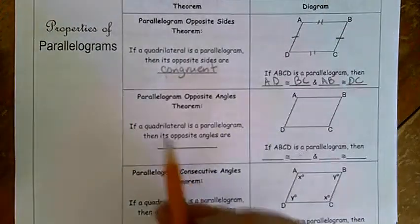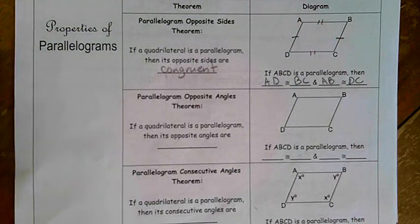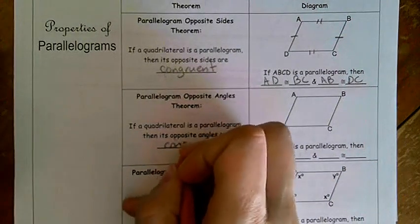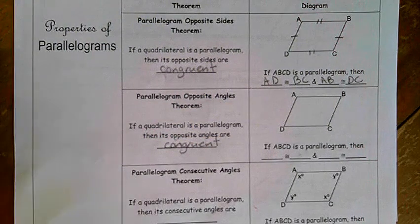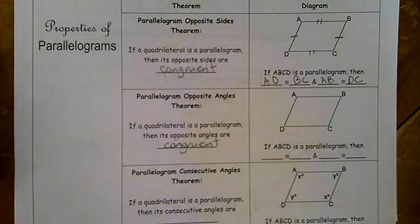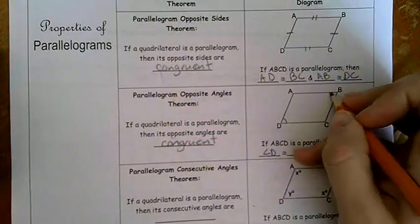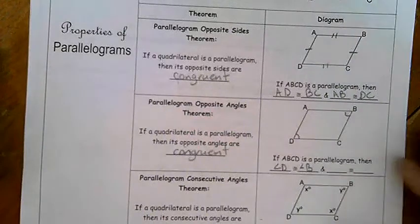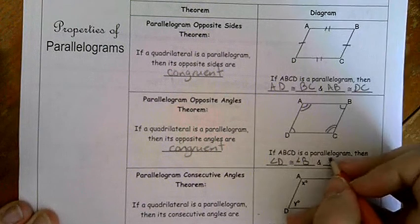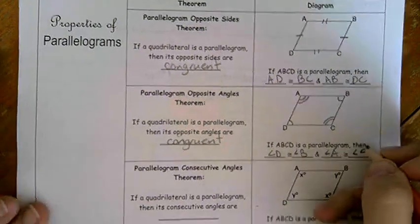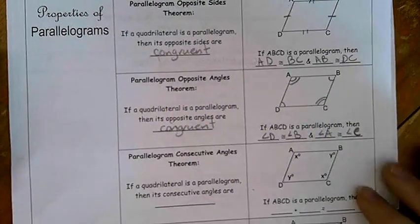The next theorem we're going to learn about, parallelogram opposite angles theorem. If a quadrilateral is a parallelogram, then its opposite angles are congruent. We can take this all the way back to chapter 3 when we're learning about parallel lines and angle identities. So we know that angle D is going to be congruent to angle B. And then angle A is going to be congruent to angle C. Again, if we know one of those angles, then we know the opposite angle as well, and that can be extremely handy.